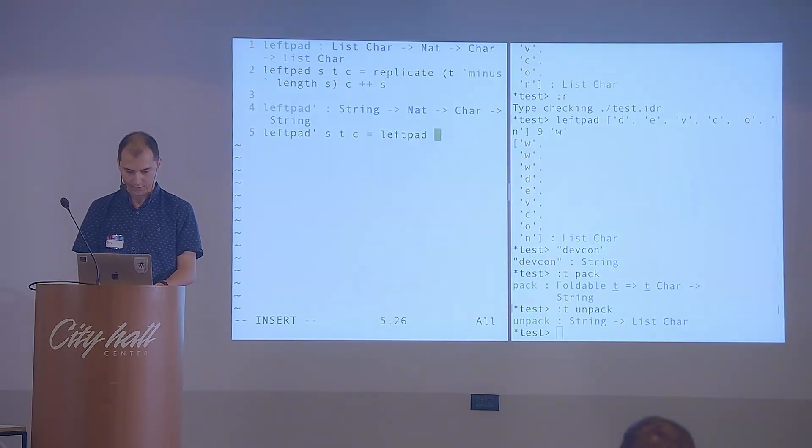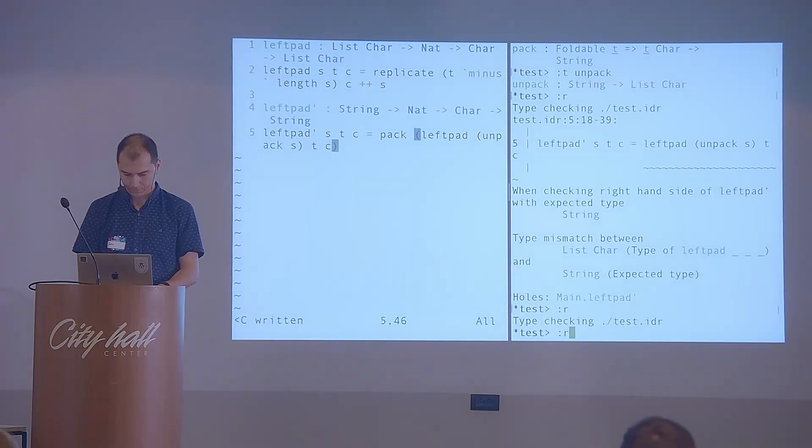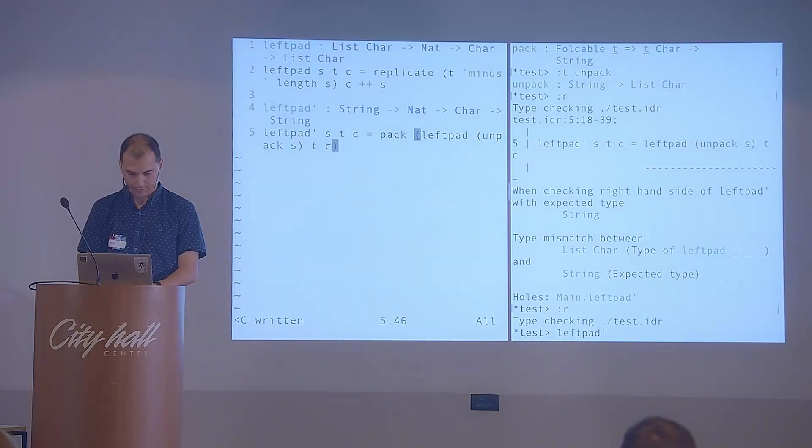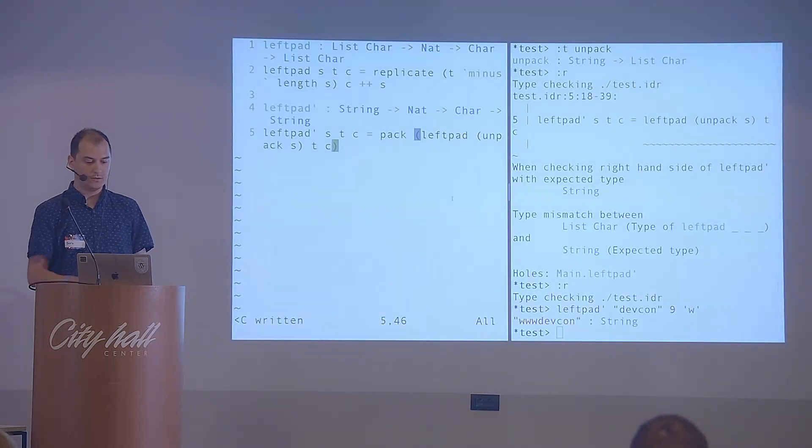What this should be doing is, we won't have a list of characters anymore, but we will have strings here. So what we want to do right now is call left pad with, we need to convert this string to list of characters so that it corresponds to this argument here. So we write unpack, t and c. And if we reload right now, it should complain. It means that we forgot to pack here because left pad is returning a list of characters, but our function is returning a string. So we just go back here and it type checked successfully. So let's call left pad of defcon 9.0 and we get a string, which is much more readable than the list previously.